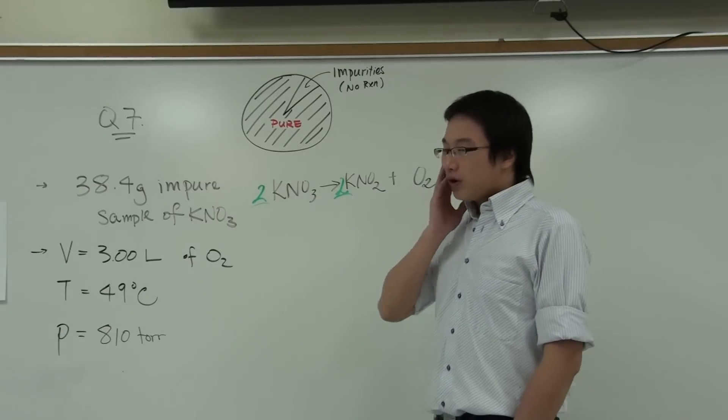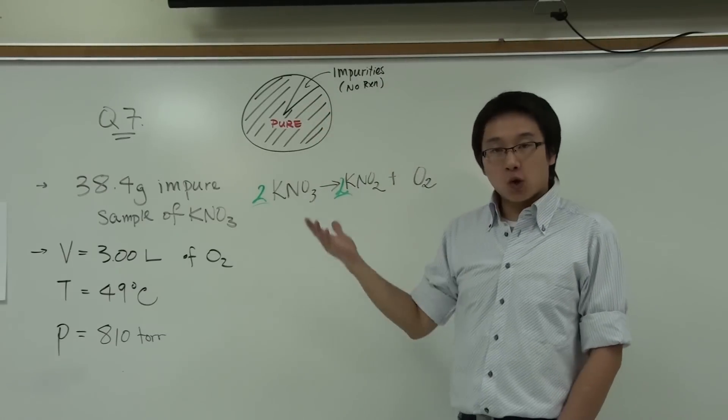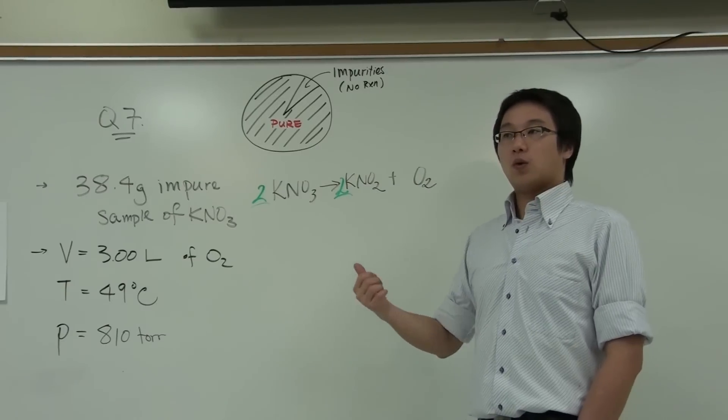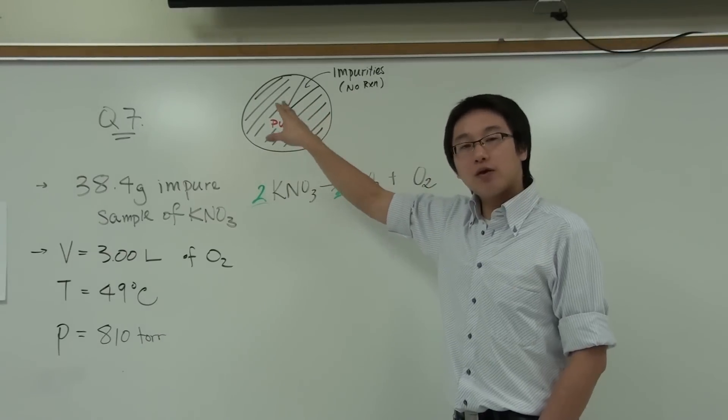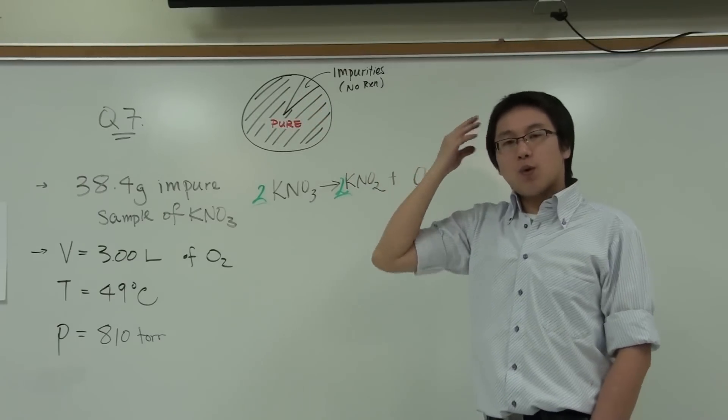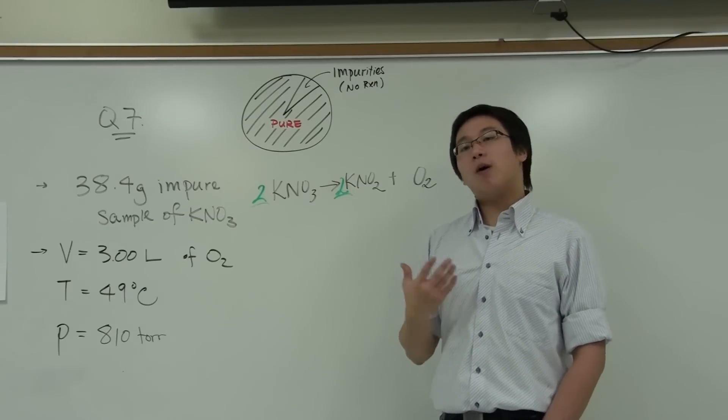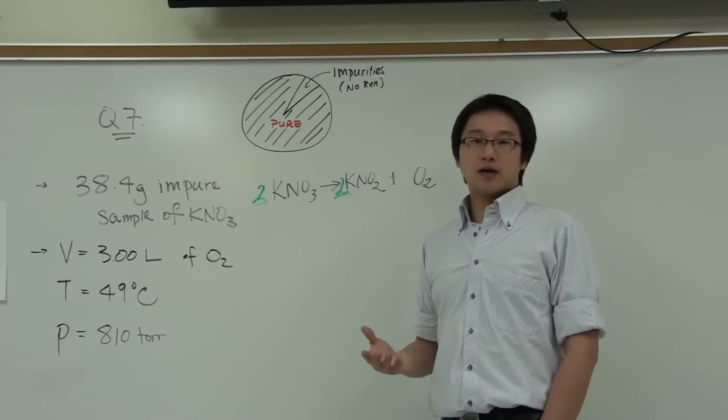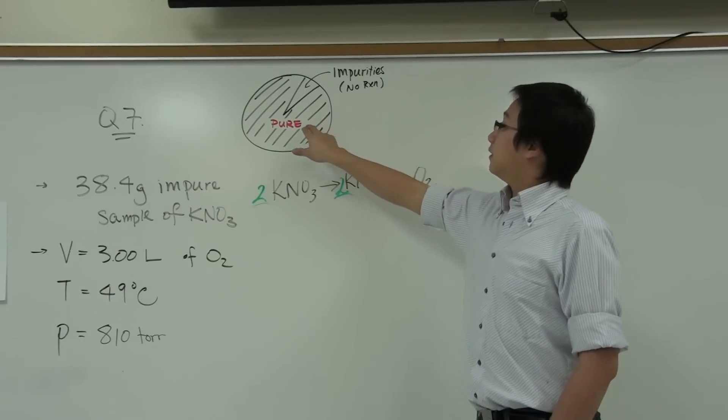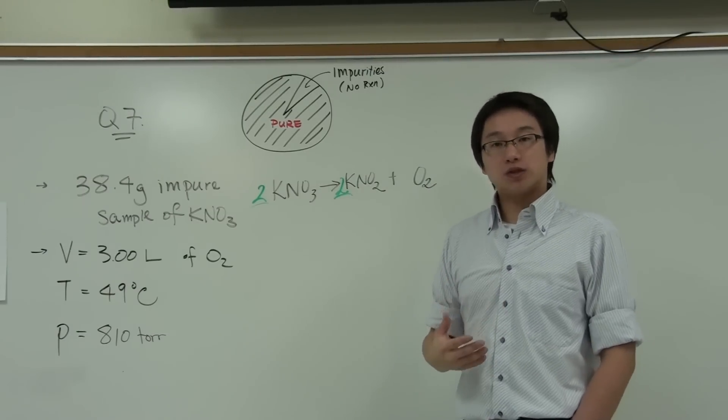So, if we really want to find out the percentage of this pure potassium nitrate, the first thing that we have to think about is how many grams are here? How many grams of potassium nitrate is in this entire sample? And if we want to find out the grams of potassium nitrate, we better find out how many moles of potassium nitrate. Because that ultimately would determine the mass of the potassium nitrate.